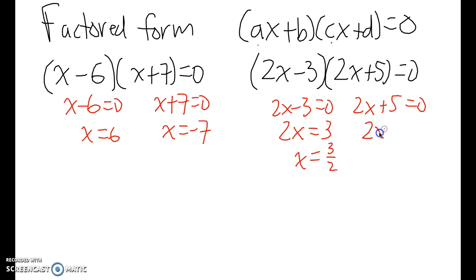Or over here, I have 2X equals negative five. So X would equal negative five halves. So it adds one final step here, but really doesn't make it that much more complicated.